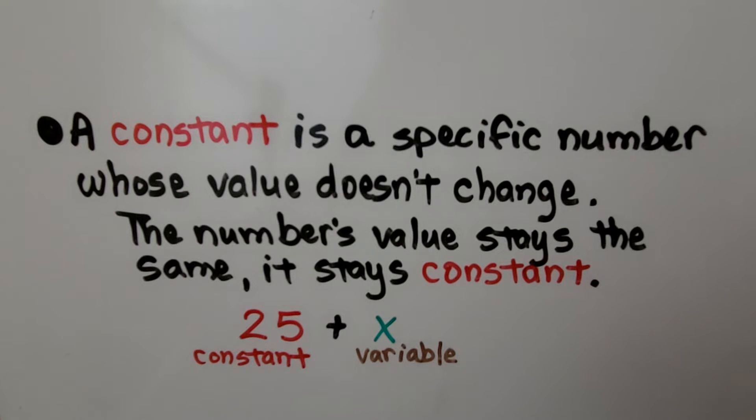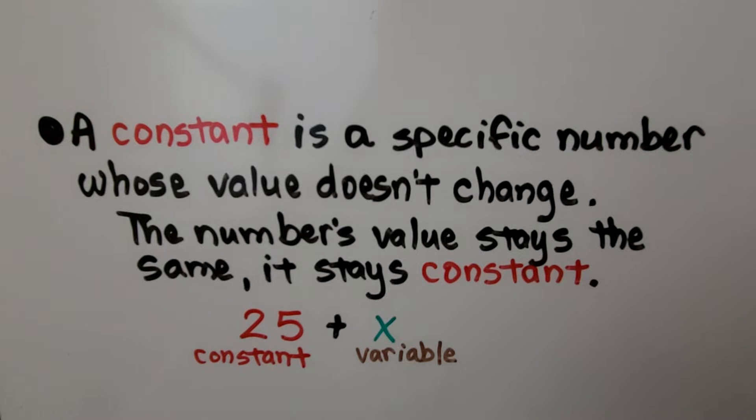A constant is a specific number whose value doesn't change. The number's value stays the same. It stays constant. Here we have 25 plus x. The 25 is our constant and the x is our variable.